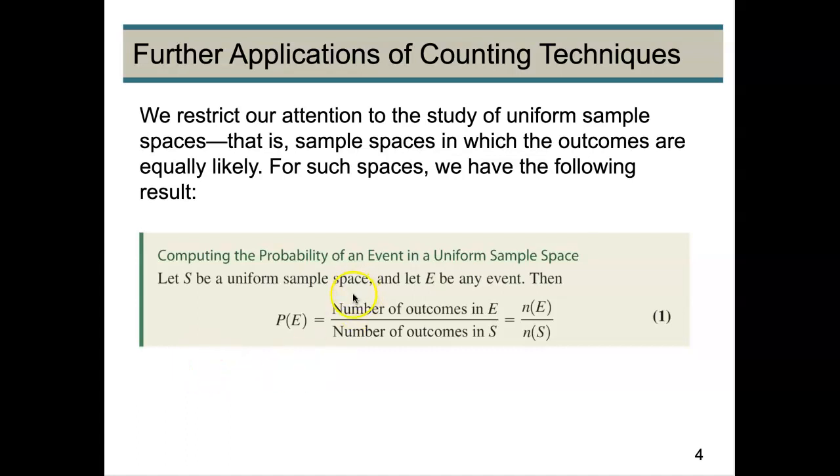If S is a uniform sample space and E is any event, then the probability of E is the number of outcomes of E divided by the number of outcomes in S. So let's do an example.